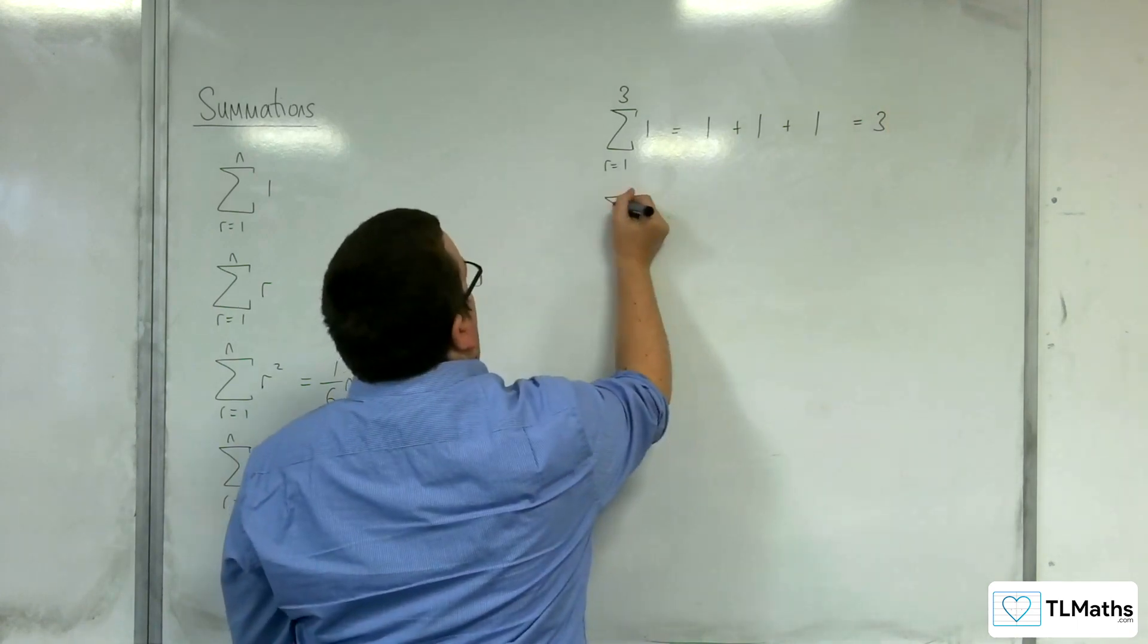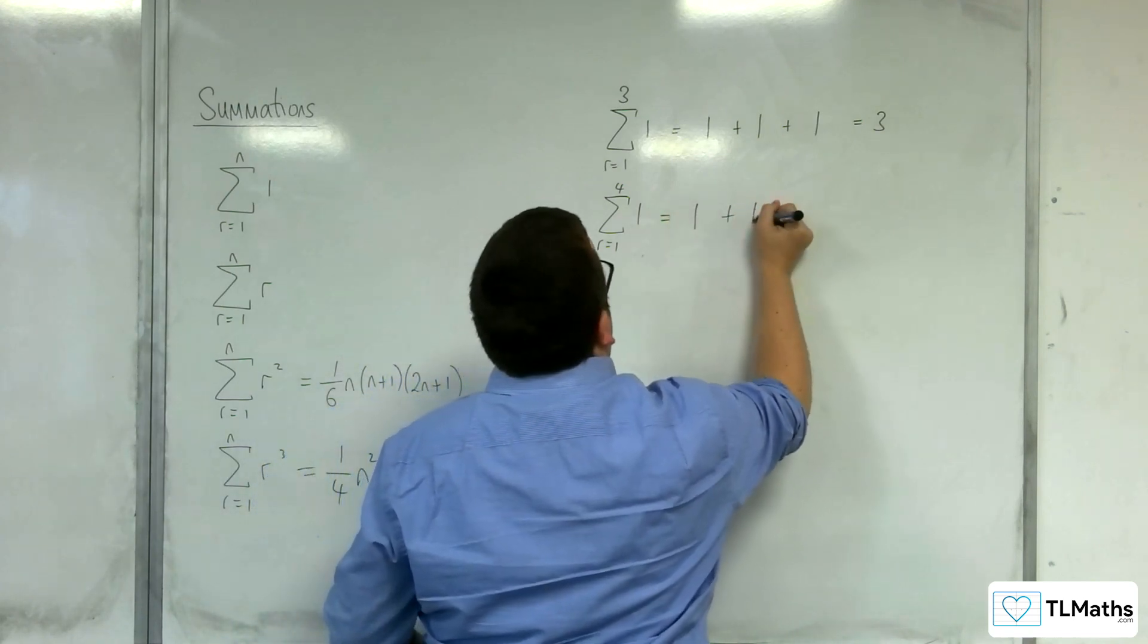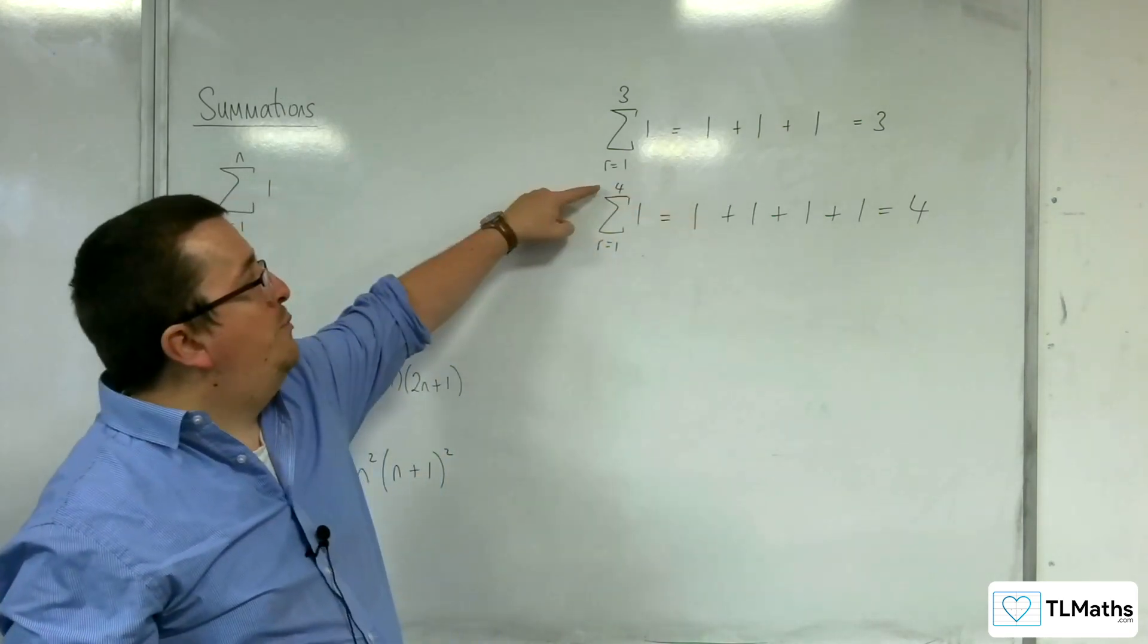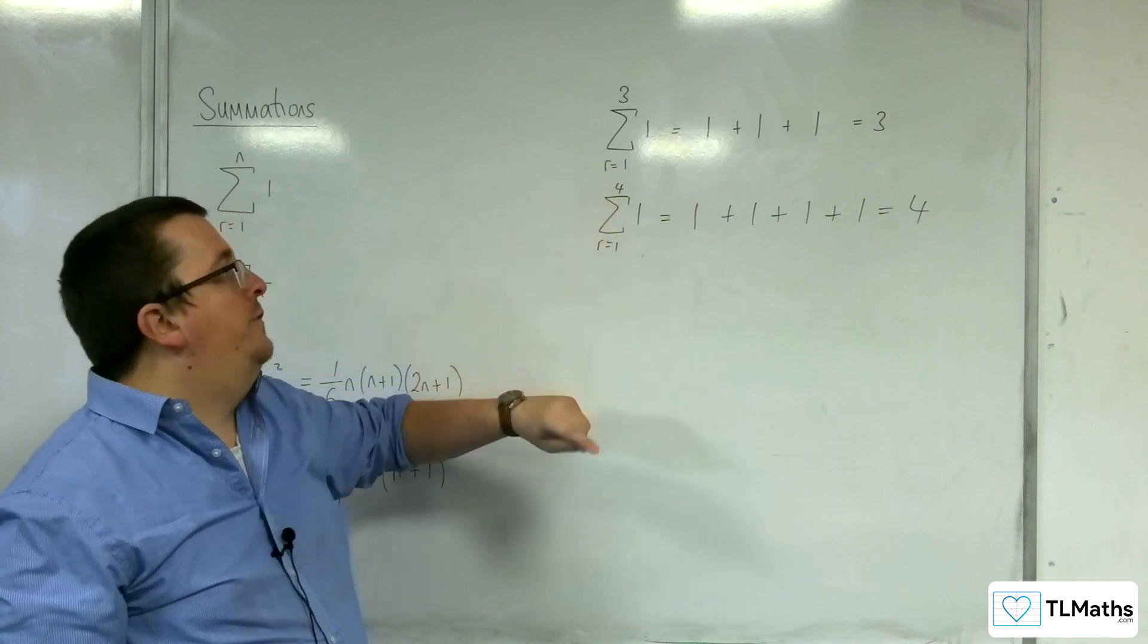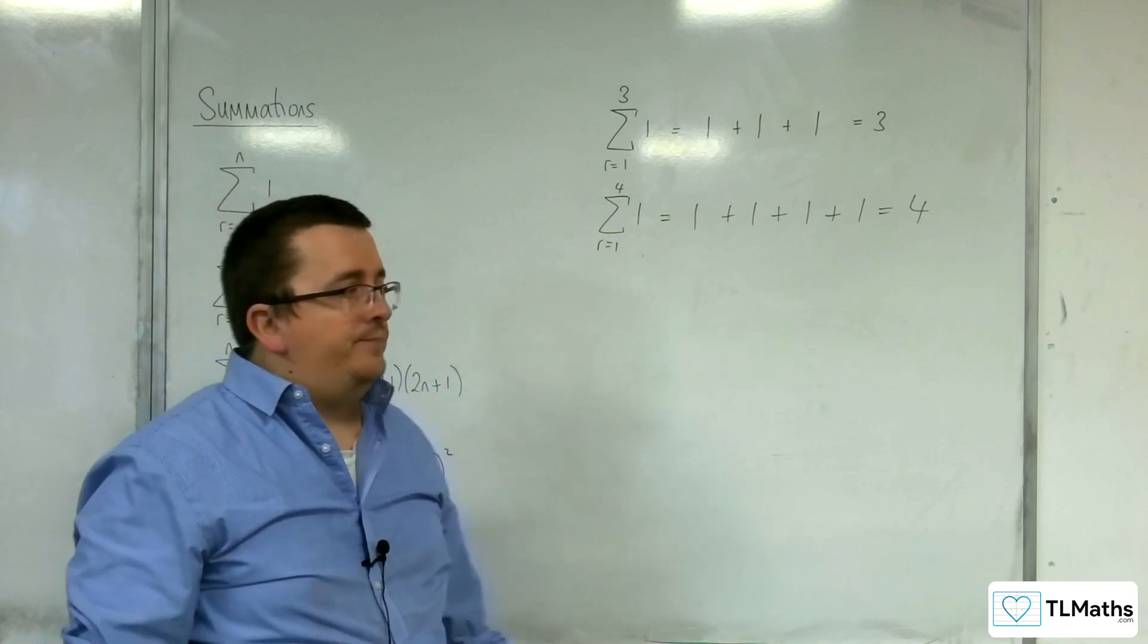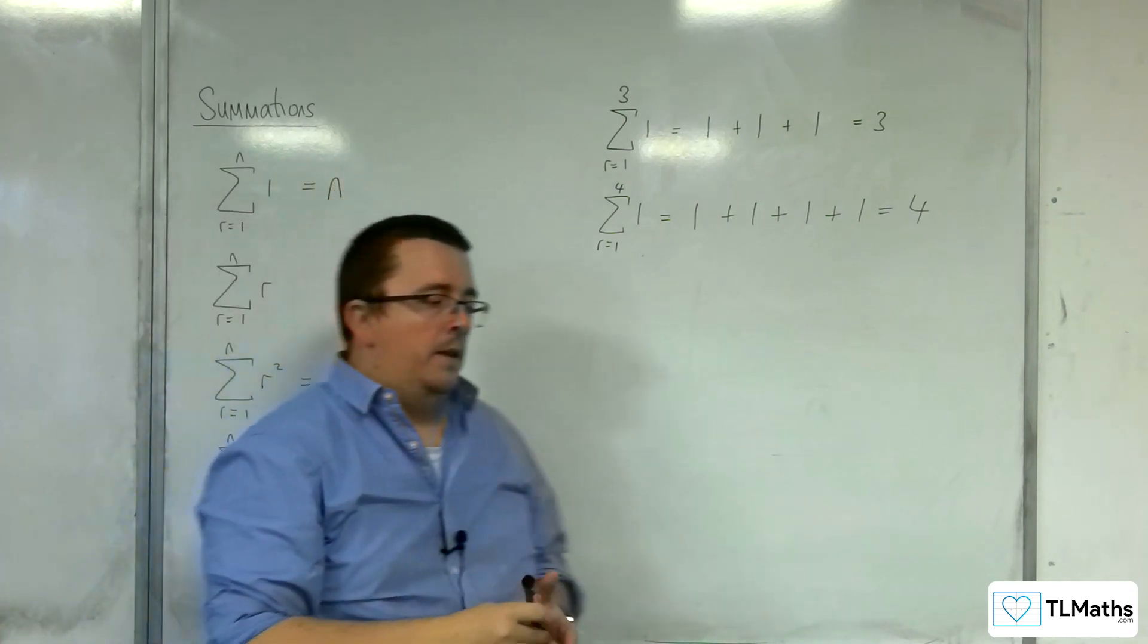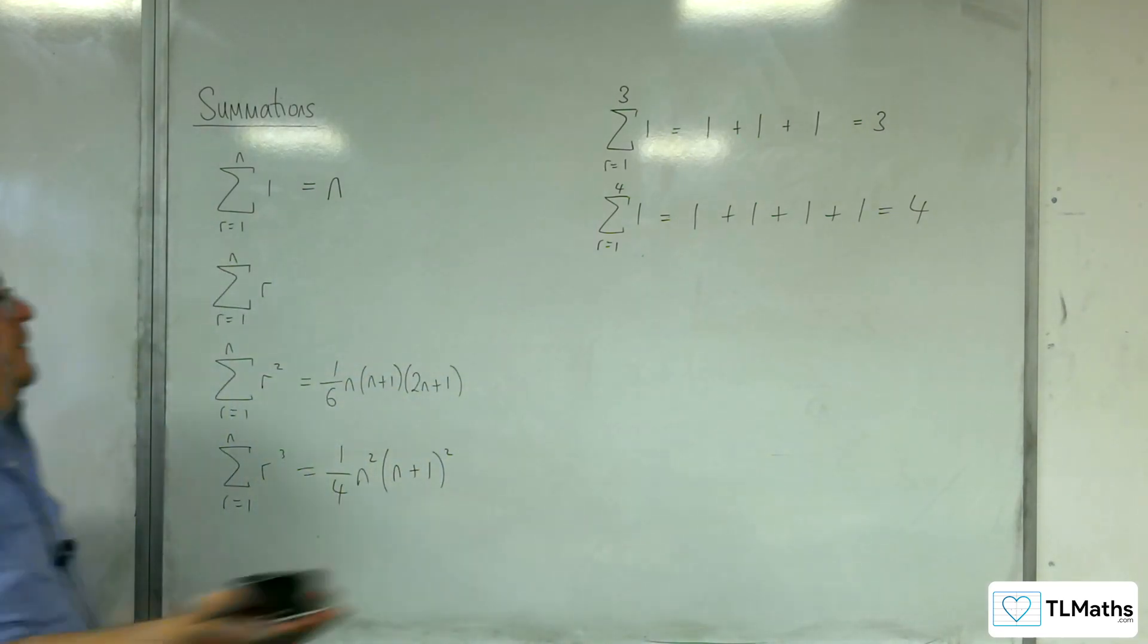If this was the summation from R is 1 to 4 of 1, then it would be 1 plus 1 plus 1 plus 1, and so you would get 4. And so the result of each of these will be precisely whatever value you put up here. If you want from R is 1 to 100 of 1, then it's going to be 100. So that means that the sum from R is 1 to N of 1 is just N. That's quite straightforward to remember and to utilize.